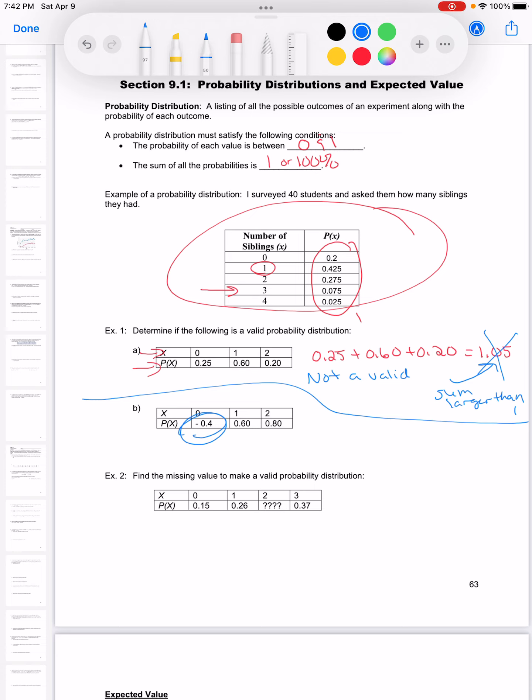That's a negative number. It's less than 0. So this is not a valid distribution, and that's because we have a negative number.